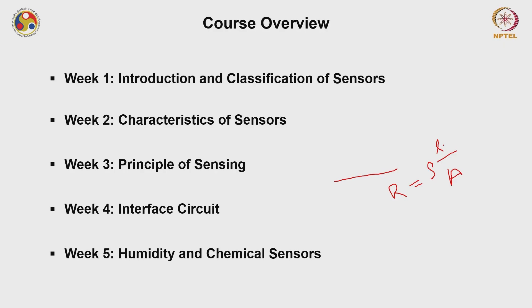In the next week, we will start discussing actual sensors, because up to week four we will have seen a generalized version of sensors — characteristics of all sensors in generic terms, principle of sensing in generic terms, and interface circuits for general sensors. But from week five, we will be discussing actual sensors. We will start our discussion on humidity and chemical sensors. This chemical sensor will mostly constitute gas sensors.